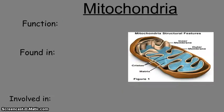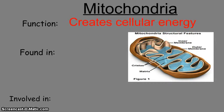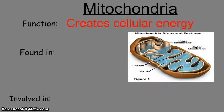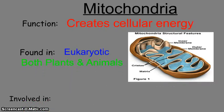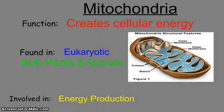The next organelle is the mitochondria. It's a funny-looking organelle with twisted membranes inside to increase surface area. Its job is to create cellular energy using a chemical process called cellular respiration. It is found in eukaryotic cells, and both plants and animals have them. Its main process is energy production, specifically respiration.